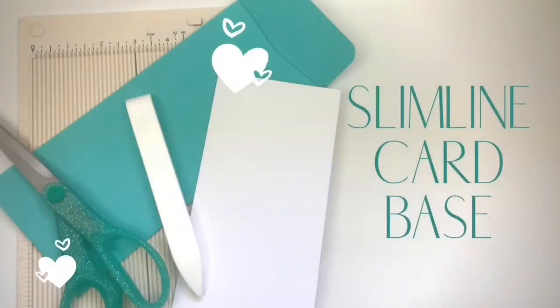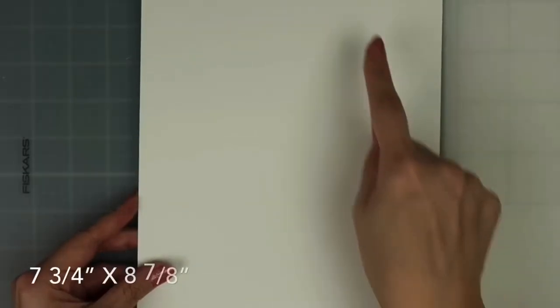First, let's create a slimline card base. Unlike an A2 size card, there are varying measurements that card makers use. My measurements are to fit inside the envelope that we'll be creating a little later in this video. First, take a piece of heavyweight cardstock and cut it down to seven and three quarters by eight and seven eighths. The cardstock I'm using is Neenah Solar White in the 110 pound version.